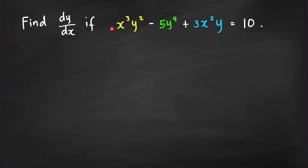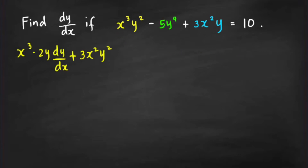Using the usual procedure, we take the derivative of both sides with respect to x. For the first term, treating y as a function of x, we need to use the derivative of a product. That gives us x³ times the derivative of y² with respect to x, applying the chain rule, plus y² times the derivative of x³, which is 3x².